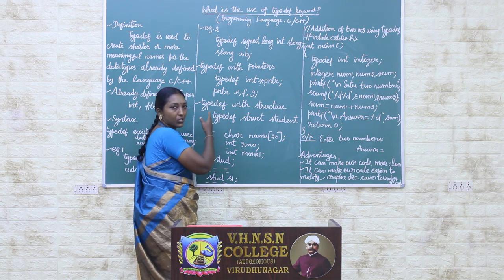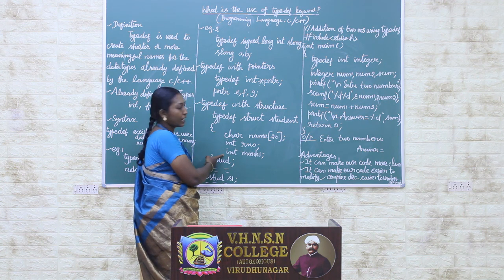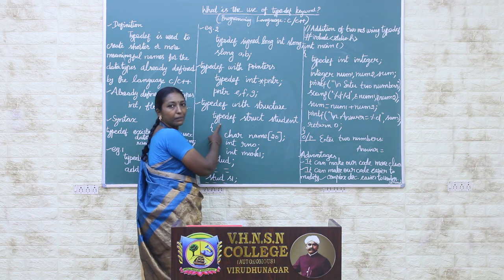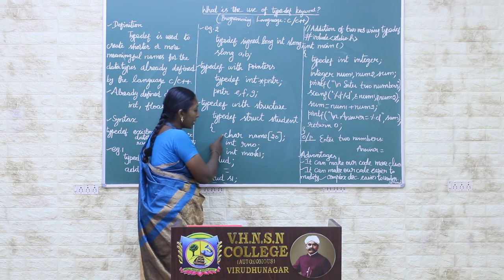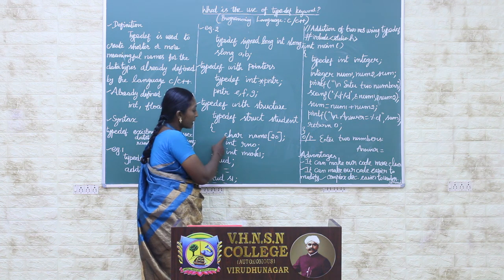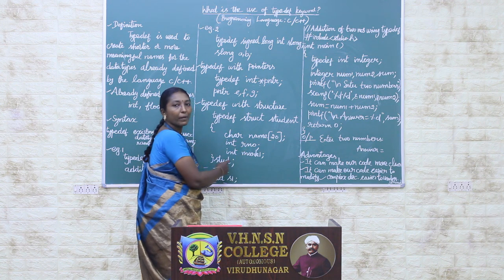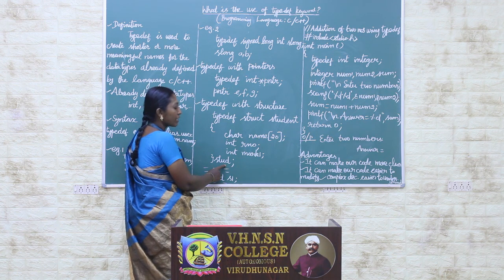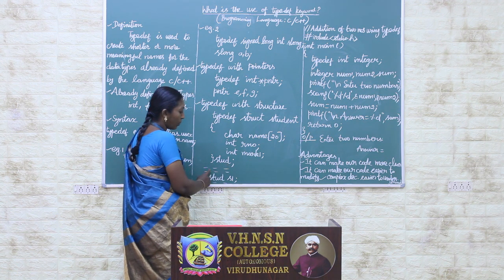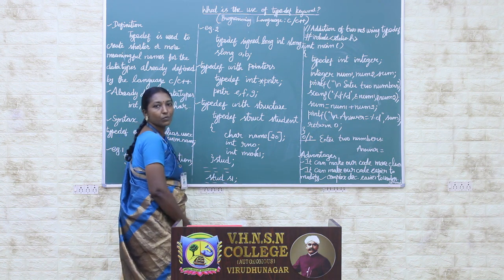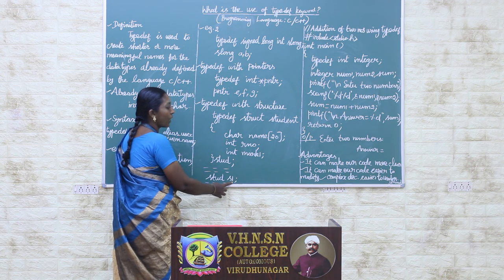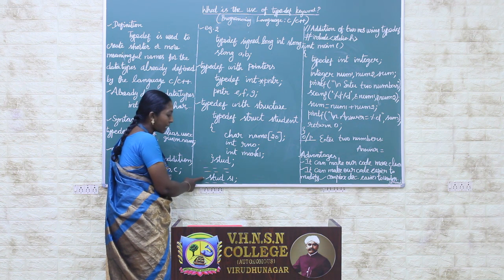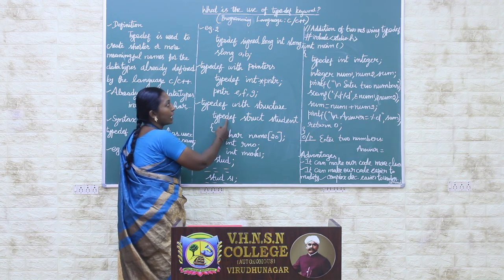The next one is typedef with structure. We know that a structure is a collection of different data types under a single name. Instead of starting with the struct keyword and then the tag name student, we can write: typedef struct student. Afterwards, we have three different variables — roll number and mark 1 — having the data types character and integer. We write the structure variable name as STUD. Then inside the program, it is enough to write STUD with S1 as the structure variable name. There is no need to again write the keyword struct because we have already used typedef.